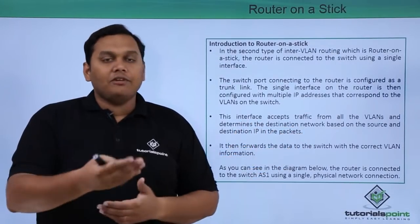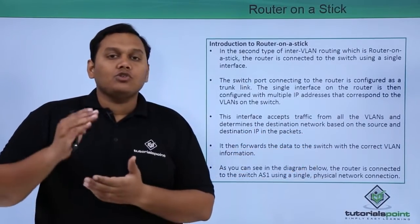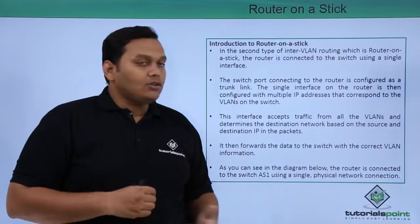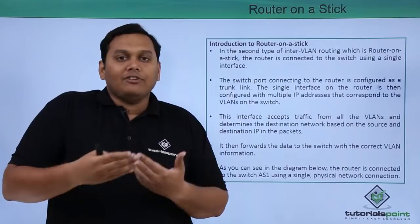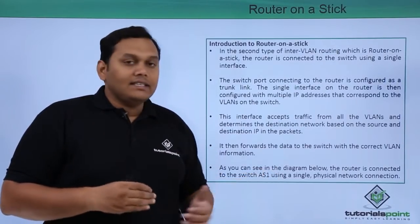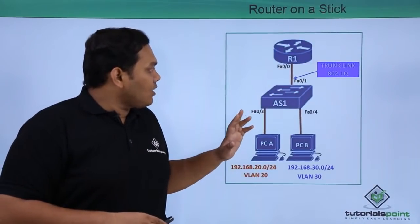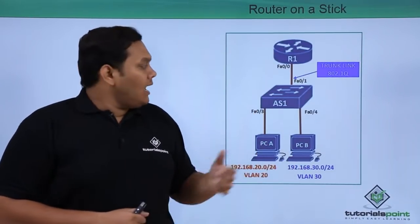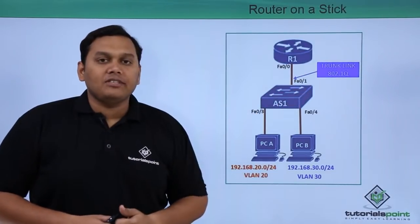The interface accepts traffic from all VLANs and then determines the destination network based on the source and destination IP addresses in the packet. It then forwards data to the switch to the correct VLAN destination, so that through that VLAN it will reach the destination IP address. As shown in the next diagram, this is a router on a stick topology with PCA and PCB connected to the AS1 switch.